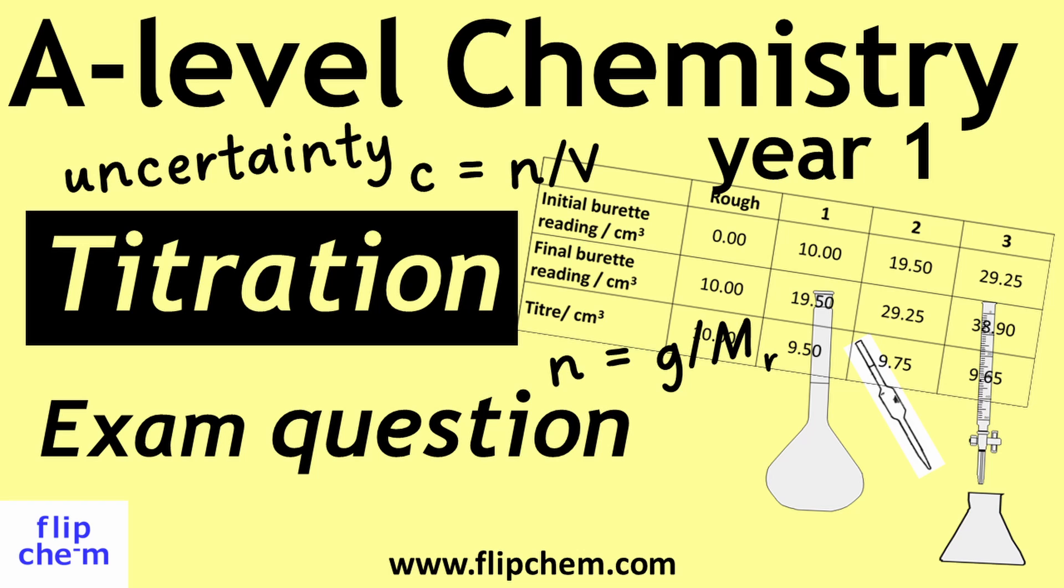Welcome everyone. In this video I'm going to go through an A-level chemistry exam question involving a titration. Details are in the description. The question involves calculating an average titer from experimental data as well as moles calculations and a percentage uncertainty. In the final part of the question we'll look at ways to change the procedure in order to reduce the percentage uncertainty.